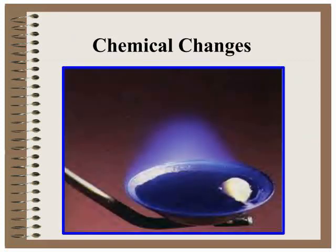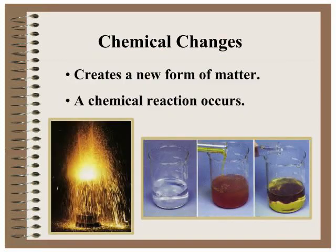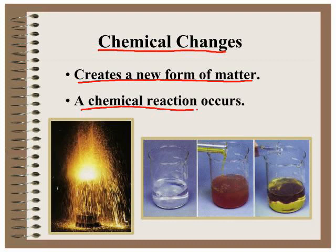We want to make sure you can predict whether a change is chemical or physical. Some physical changes look like they make different matter, but you're looking for evidence that a chemical change has occurred. In order for a chemical change to have occurred, you are basically creating a new form of matter — whatever you started with is no longer there.